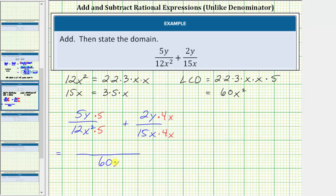So now we can add the numerators. Here we have 25y plus 8xy. Now that we have the sum, we need to see if this rational expression simplifies by factoring both the numerator and denominator, and see if there are any common factors.